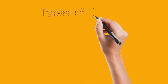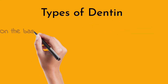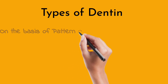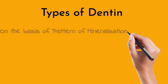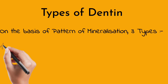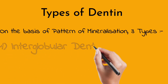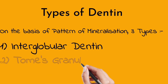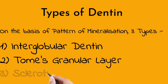On the basis of pattern of mineralization, dentine is classified into three types: globular or interglobular dentine, Tomes' granular layer, and sclerotic or transparent dentine.